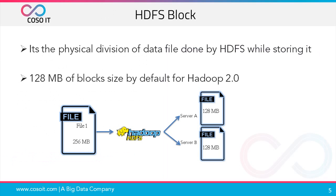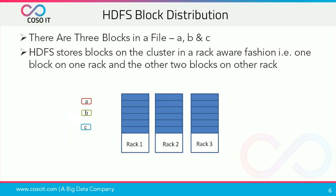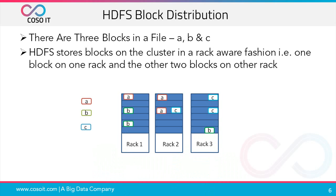An HDFS block is the physical division of a data file done by HDFS while storing it. By default, Hadoop 2 has a block size of 128 megabytes. HDFS stores blocks on the cluster in a rack-aware fashion — one block on one rack and the other two blocks on another rack. It usually places one replica on a node in the local rack, another on a node on a completely different remote rack, and the third on a different node on that remote rack.